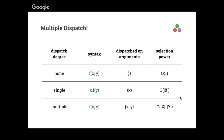Going back to the dispatch diagram, selection power really just means: for one piece of code, how many possible implementations could that one piece of code actually be calling? With no dispatch, what you see is what you get. With single dispatch, it's linear. With multiple dispatch, it's proportional to the possible selection of each of the arguments — an exponential increase in power.